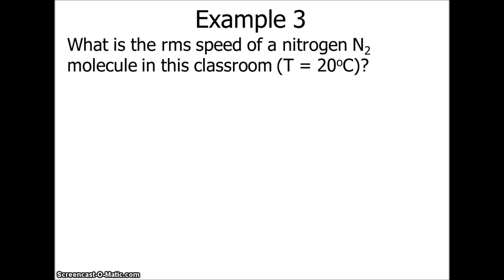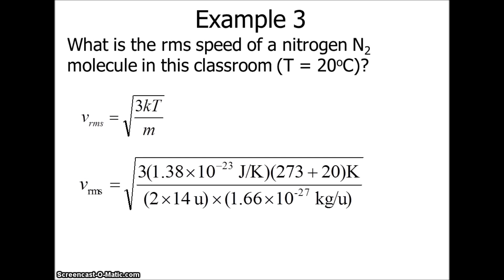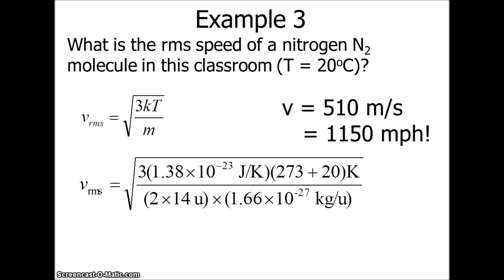What is the root mean square speed of a nitrogen N₂ molecule in a room at about 20°C, which is 293 K? Nitrogen is diatomic, so its mass is 28u × 1.66 × 10⁻²⁷ kg/u. Plugging in, we get 510 m/s. That RMS speed is related to the temperature and the energy of the nitrogen particles.